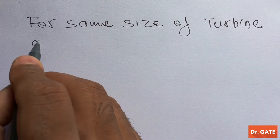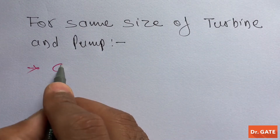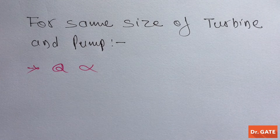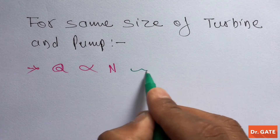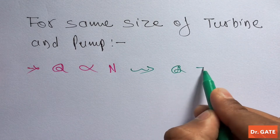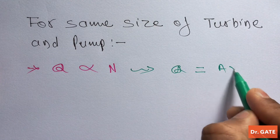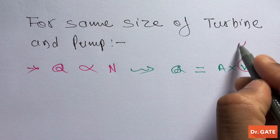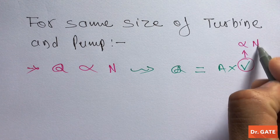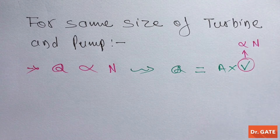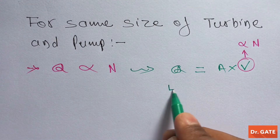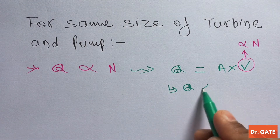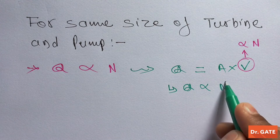For the same size of turbine and pump, discharge is directly proportional to the rotational speed. We know that discharge equals cross-sectional area times velocity, and velocity is directly proportional to the rotational speed. So from here we can conclude that discharge is directly proportional to the rotational speed.